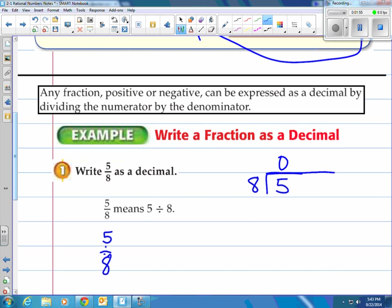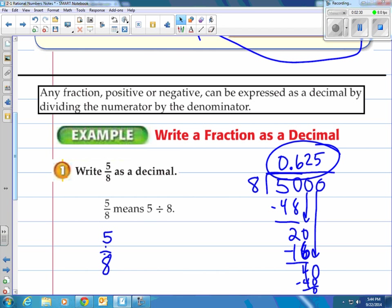How many 8s go into 5? 0. Take your decimal, place it here, add a 0 here. 8 goes into 50 how many times? That's 6. That's 48. Subtract, you get 2. Put another 0, bring it on down, you got 20. How many 8s go into 20? 2 without going over. 2 times 8 is 16. Got your 4. Bring it on down. There's 40. How many 8s go into 40? 5 exactly. So that's going to be 0 here. Once we have a 0, then we know that that terminates. It's 0.625 as the answer.